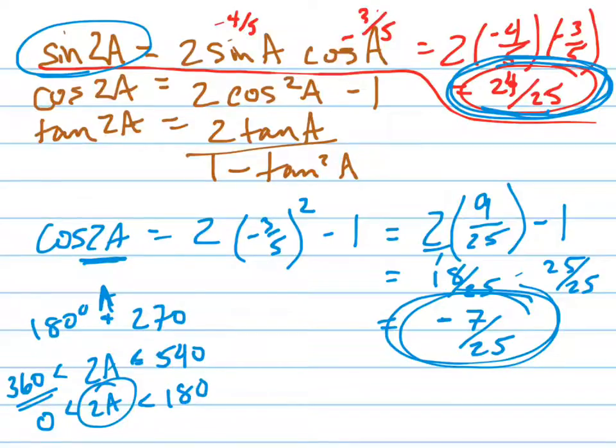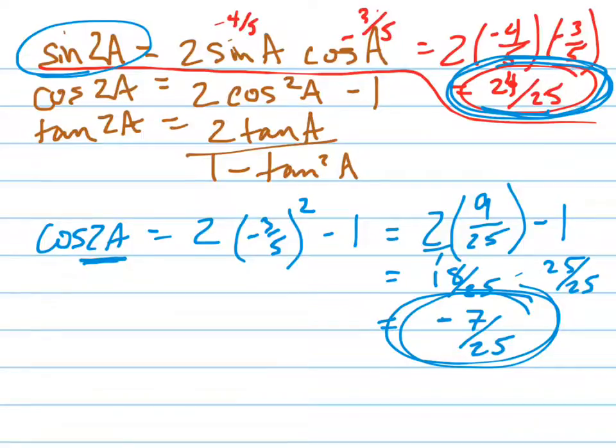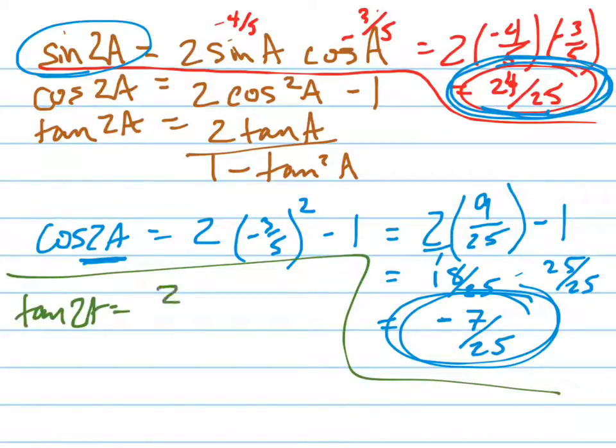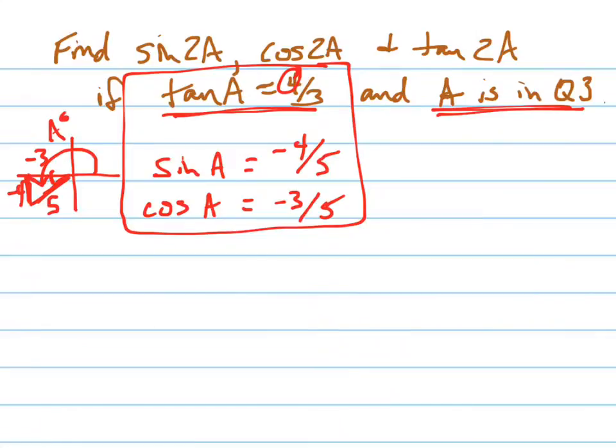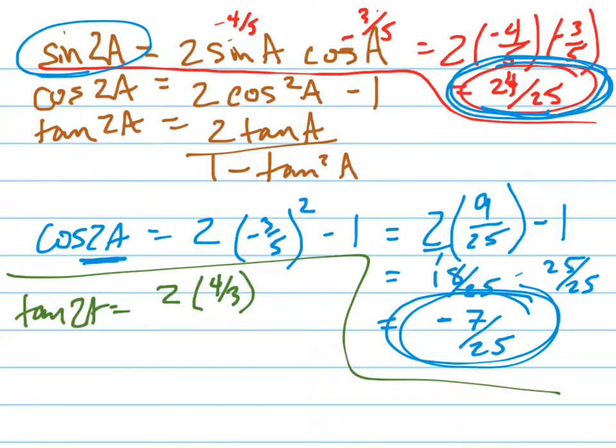Now let's find the tangent of 2A. The tangent of 2A, use that formula up there. Tangent of 2A equals 2 times the tangent of A, and the tangent of A was 4/3. 2 times 4/3 all over 1 minus 4/3 squared.